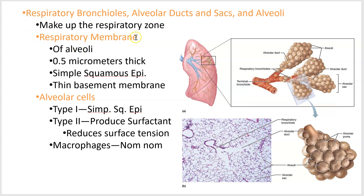The respiratory membrane is the very fine layer — the squiggly lines you see in the slide image. It's mostly simple squamous epithelium and a thin basement layer. It's so thin because gases need to diffuse across it, and we'll see that in the physiology section.